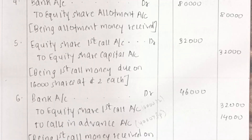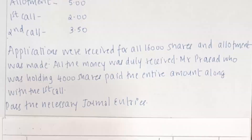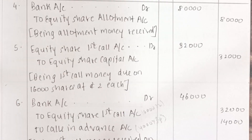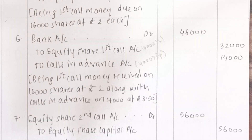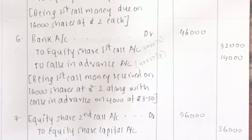Moving on to the fifth entry on first call: Equity Share First Call Account debit to Equity Share Capital — Rs 32,000, that is 16,000 multiplied by Rs 2. Irrespective of whether it is calls in arrears or calls in advance, the first entry of calls will always be the same; only the second entry is affected. So in this sum we have calls in advance. Our sixth entry will be: Bank Account debit to Equity Share First Call Account and to Calls in Advance Account. Calls in arrears are recorded on the debit side, so the opposite — calls in advance — is recorded on the credit side. Narration: first call money received along with calls in advance.